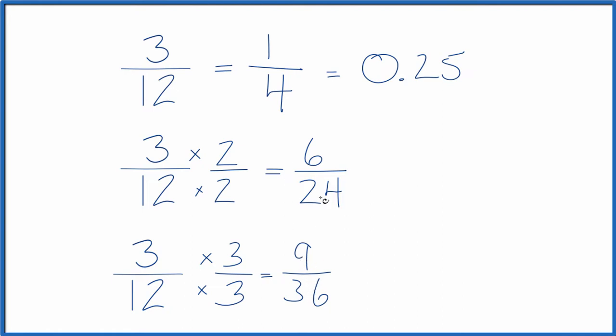All of these, 9 36ths, 6 24ths, 1 fourth, and 3 twelfths, they equal the decimal 0.25, because they are equivalent fractions.